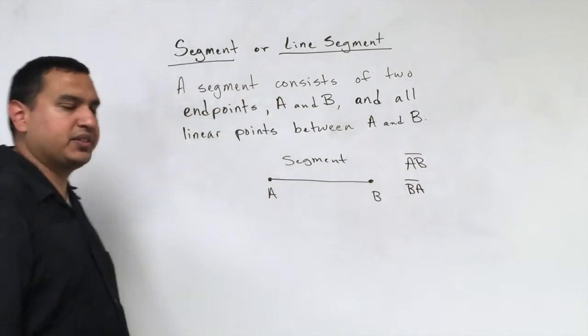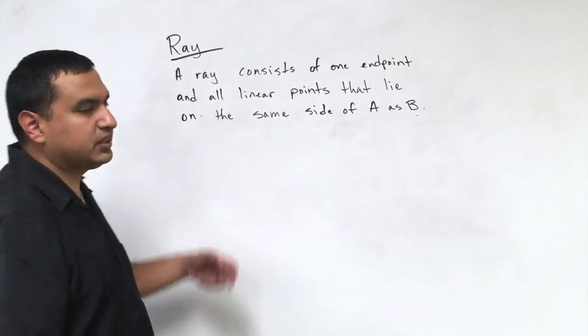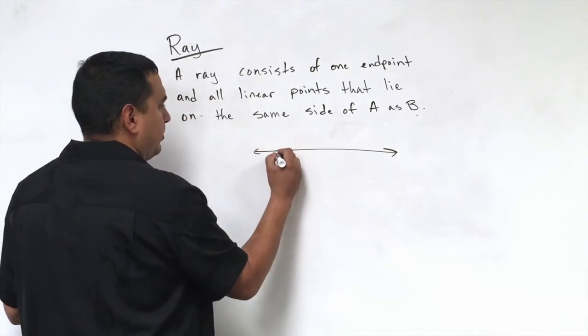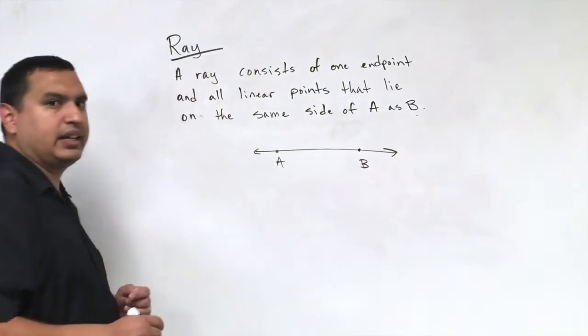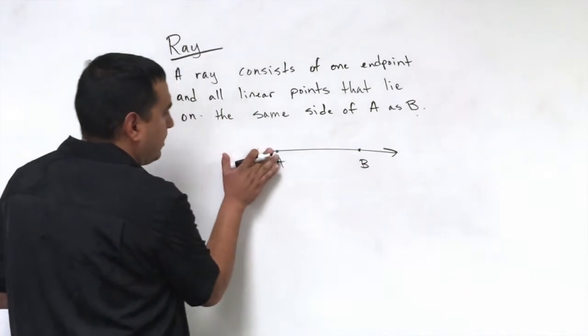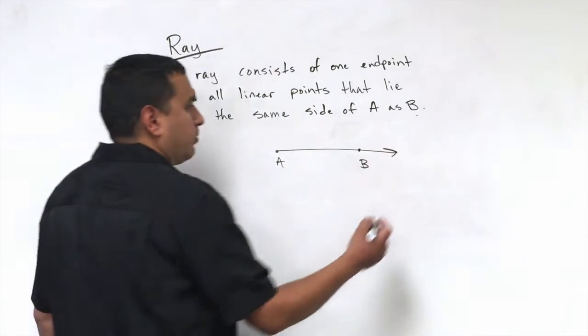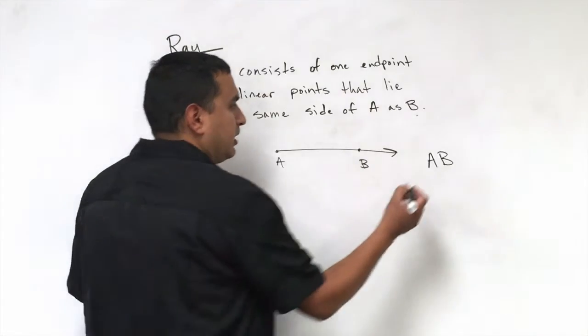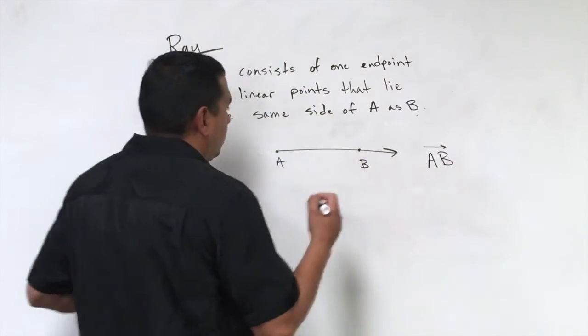This word is ray, and the ray consists of one endpoint and all linear points that lie on the same side of A as B. So if we look at what we have for our line, we have two points, A and B, that are on this line. With a ray, I could start my ray this way, and so I just have a ray AB. So the way we would name that, and we would write this, is we'd have a capital A, capital B, and our arrow would point to the right.